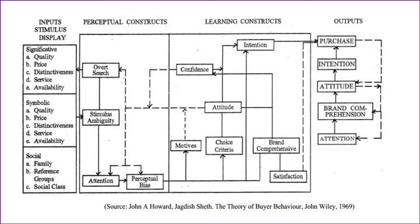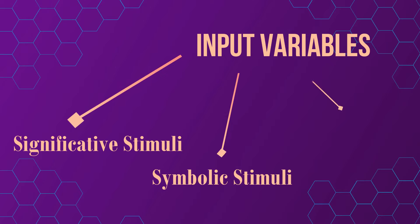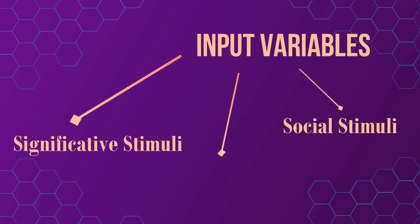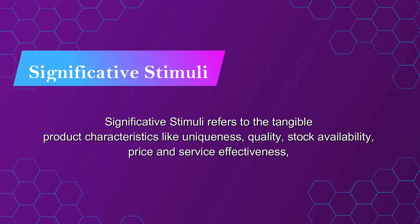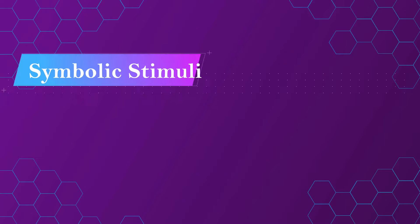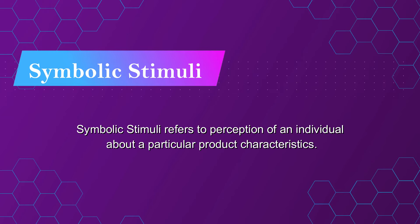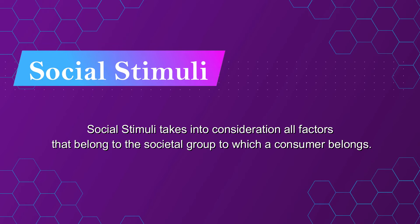Inputs are provided by three types of stimuli: significative stimuli, symbolic stimuli, and social stimuli, which are essential to making a purchasing decision. Significative stimuli refers to tangible product characteristics like uniqueness, quality, stockability, price, and service effectiveness. Symbolic stimuli refers to an individual's perception about particular product characteristics.